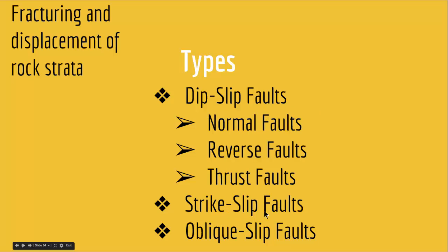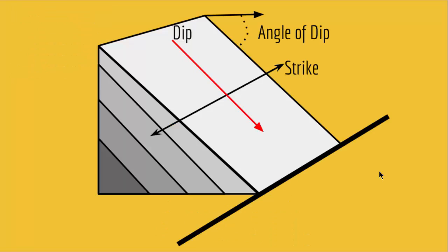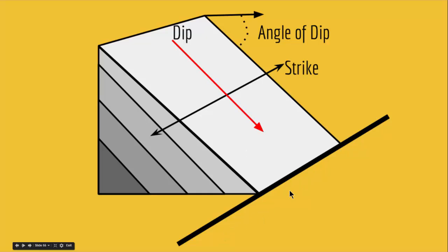But what are dip slip and strike slip faults? The dip and strike come from the concept of a dipping bed. Imagine you have strata going into the earth at an angle. The angle between this layer and a horizontal line is called the dip. The line where the strata intersects the earth's surface is called the strike. So if you have a fault where movement is primarily parallel to the inclination, that is a dip slip fault. If movement is horizontal, that is a strike slip fault.